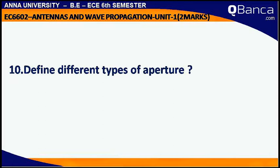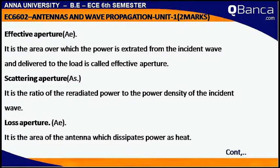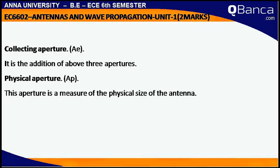We find different types of aperture. Effective aperture: it is the area over which the power is extracted from the incident wave and delivered to the load. Scattering aperture: it is the ratio of the re-radiated power to the power density of the incident wave. Loss aperture: it is the area of the antenna which dissipates power. Collecting aperture: it is the addition of the above three apertures. Physical aperture: this aperture is the measure of the physical size of the antenna.